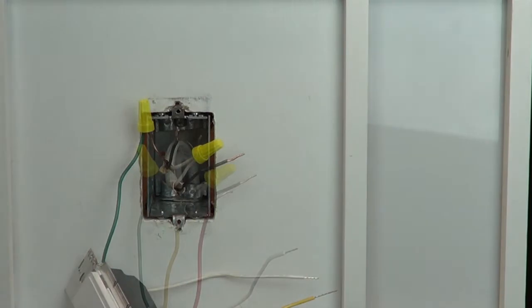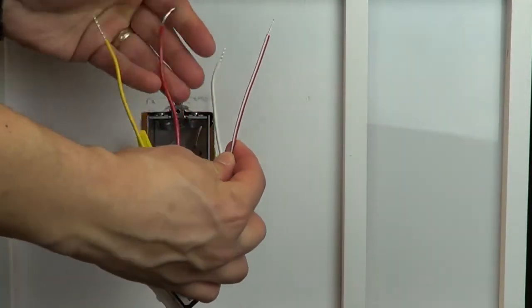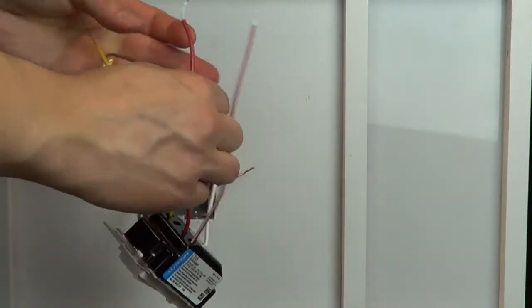Next, connect the hot live wire from the old switch to the solid red wire on the dimmer connector, using a wire cap.